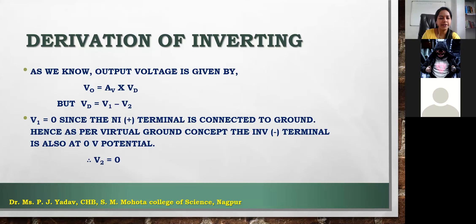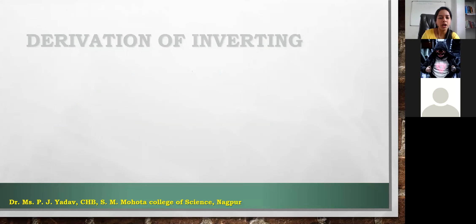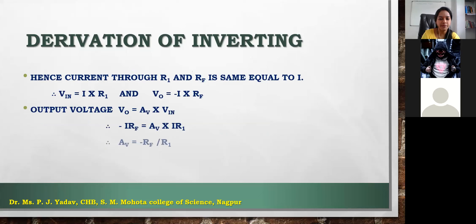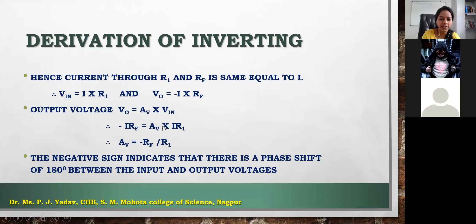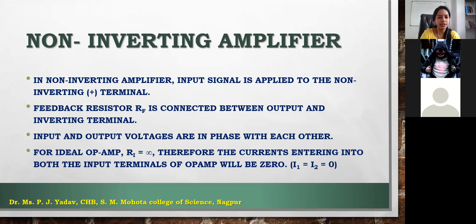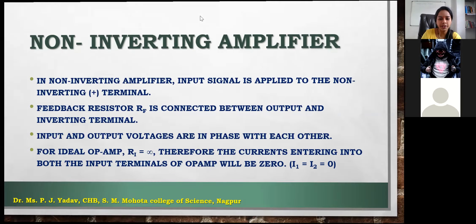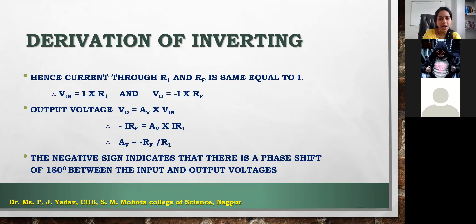We have also seen the derivation — the formula for the inverting amplifier. The gain of an inverting amplifier is denoted as minus RF by R1. This is the gain of the amplifier and the output voltage is gain multiplied with the input. So the output of the inverting amplifier is gain into VIN — whatever input we have, multiplied with the gain, gives the output.